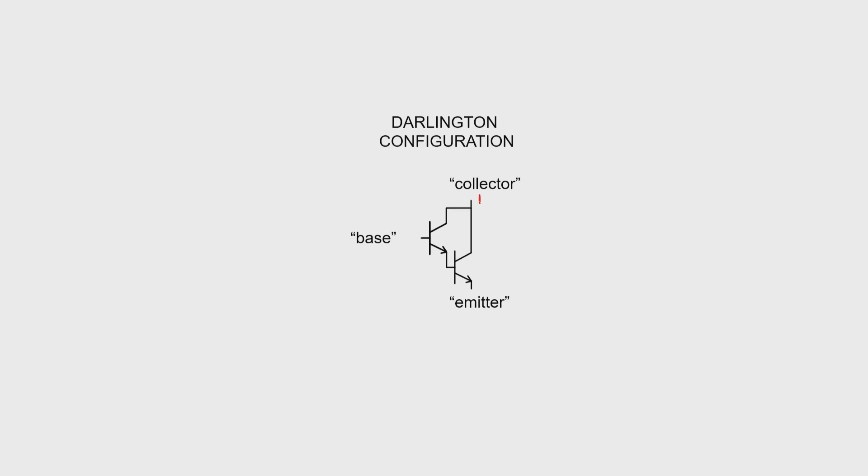Let's call the current going into the set IC. Let's call the current going into the base over here IB, and we'll call the current coming out of the emitter down here I sub E.